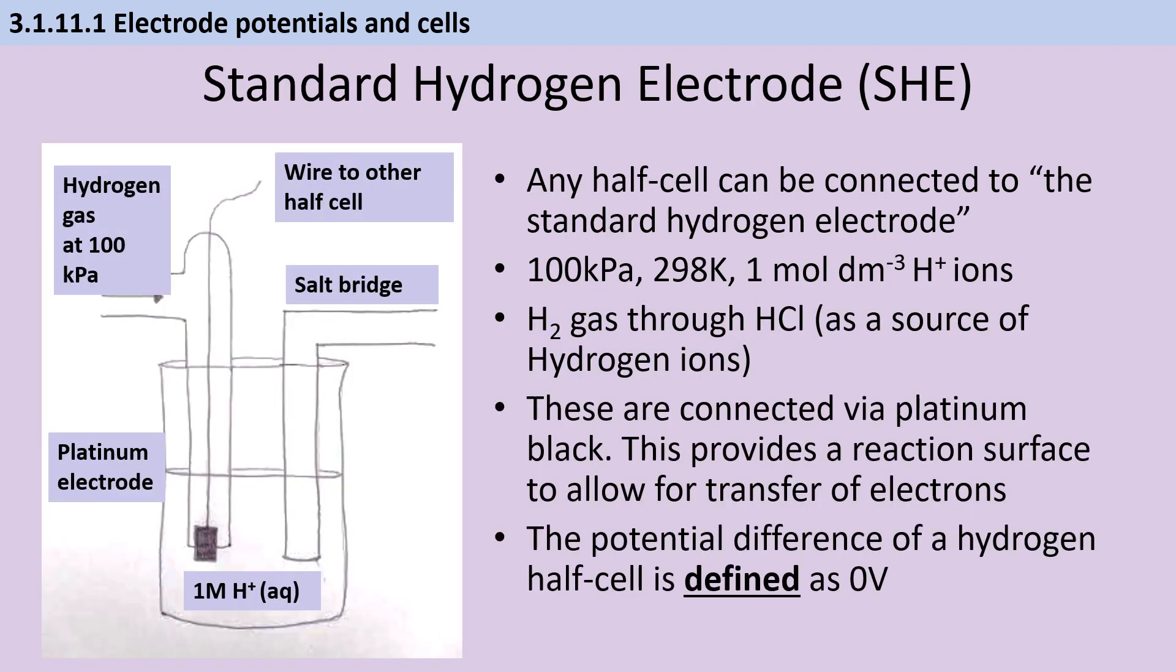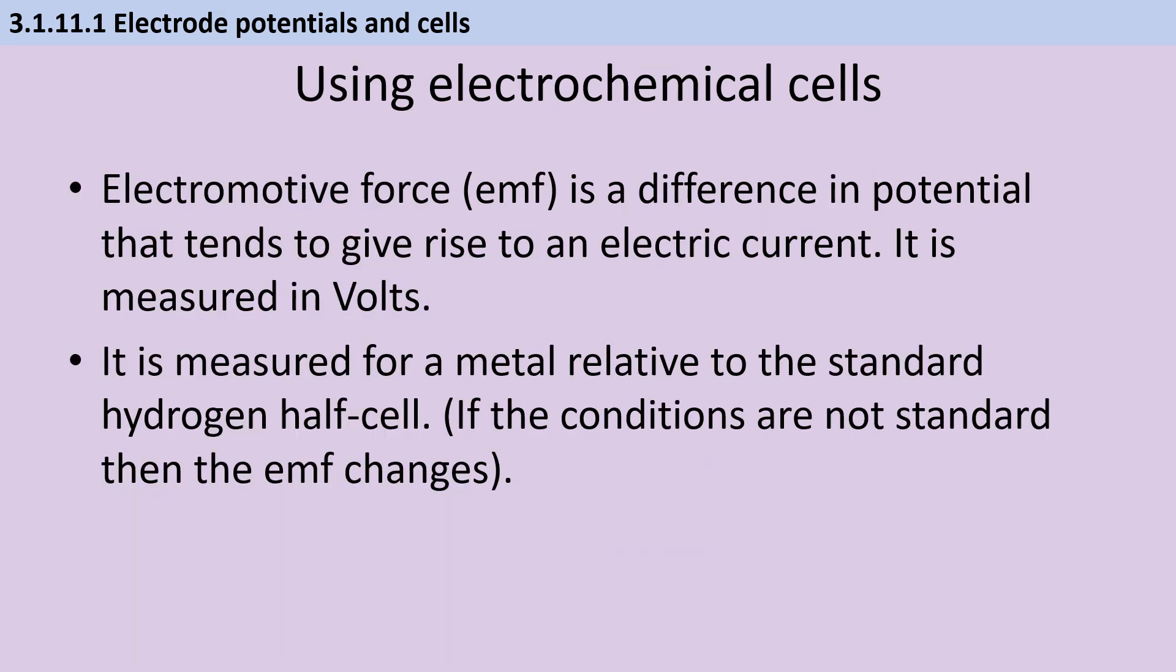The potential of any half cell can be identified by connecting it to the standard hydrogen electrode, which by definition has a potential of zero. This has to be measured under standard conditions. So hydrogen gas is pumped in at 100 kilopascals, with a temperature of 298 Kelvin, with usually a one mole solution of hydrochloric acid, or another source of hydrogen ions. Crucially, it's the hydrogen ions that need to be at one mole per decimetre cubed. These are connected via platinum black, which provides a reaction surface to allow for a transfer of electrons. By connecting a half cell to the standard hydrogen electrode under standard conditions, it's possible for us to measure the electromotive force, which is measured in volts.